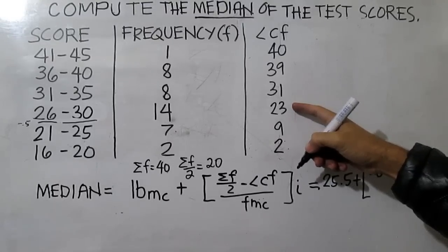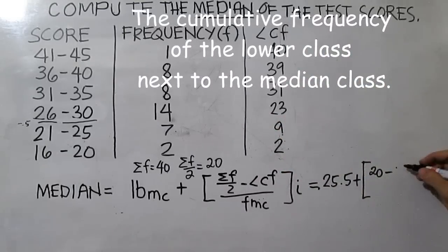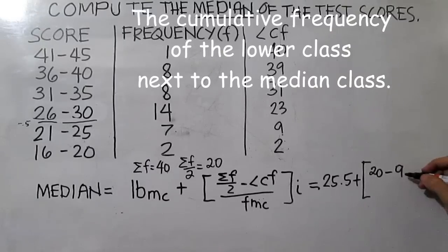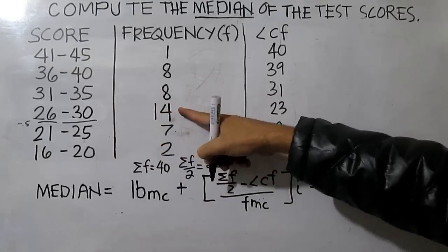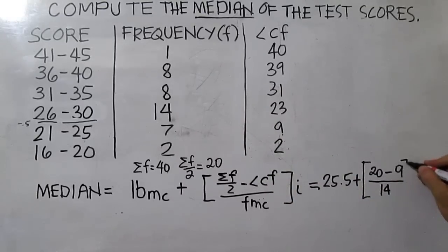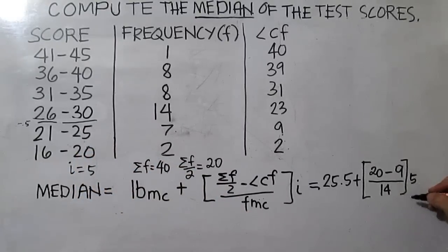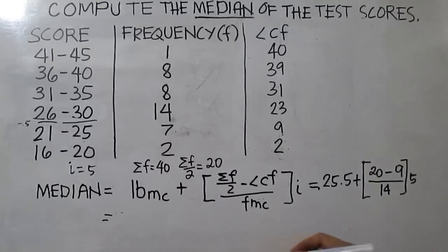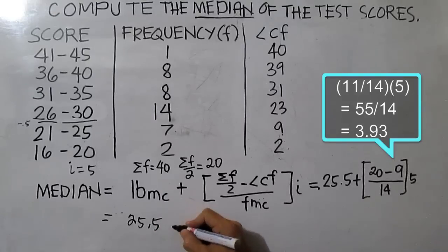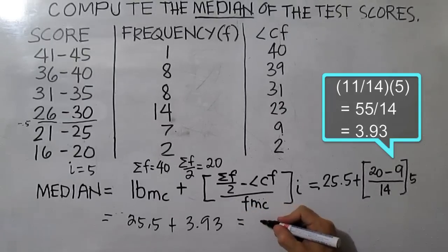The less than cumulative frequency here is the cumulative frequency of the lower class next to the median class. In this case, you are referring to the cumulative frequency which is 9. Then, divided by the frequency of the median class, which is 14. Then, multiply by the class width, which is 5. So 25.5 plus 3.93 is 29.43.